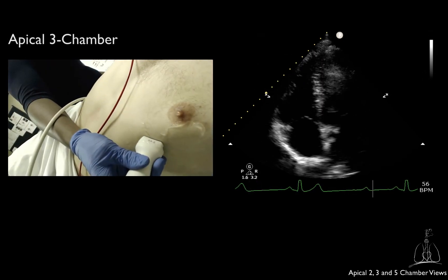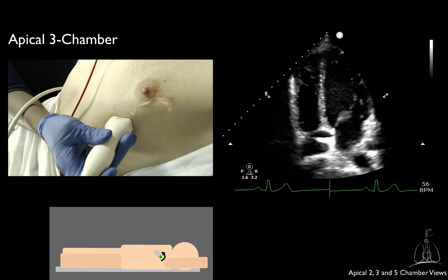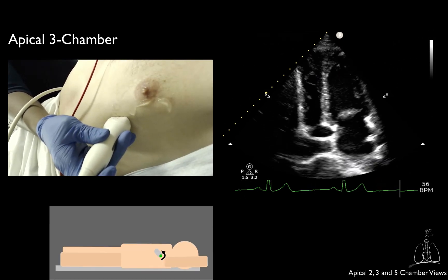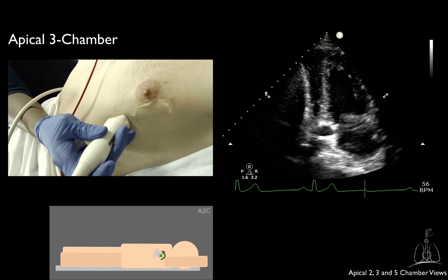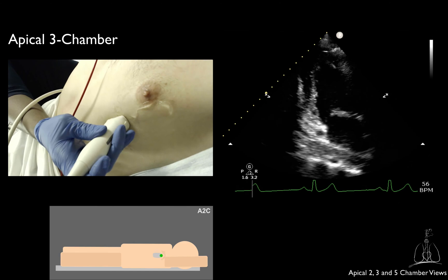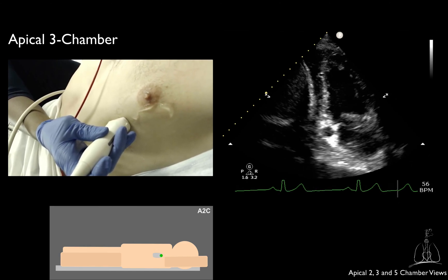To obtain the apical 3 chamber, continue rotating counterclockwise from the apical 2 chamber. The marker should be pointing towards the right shoulder.